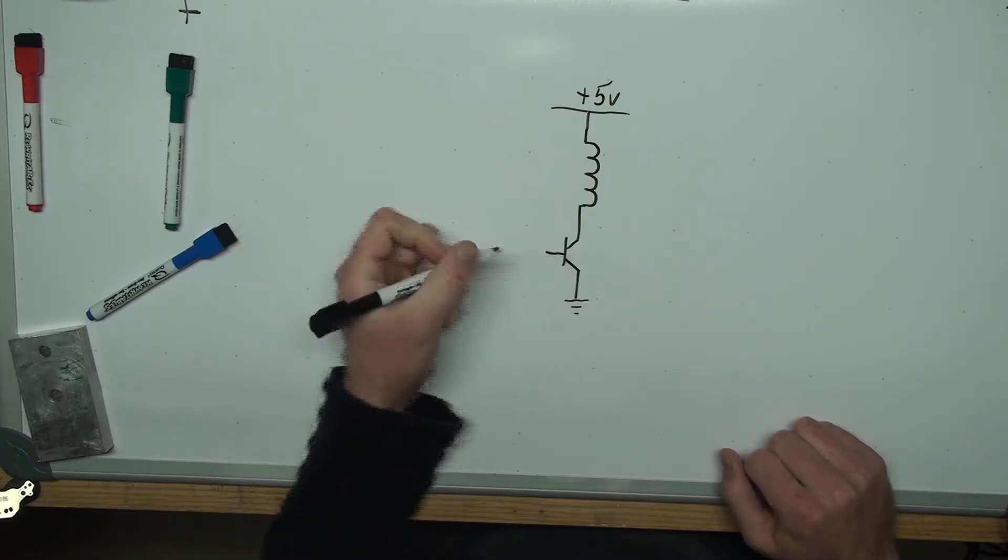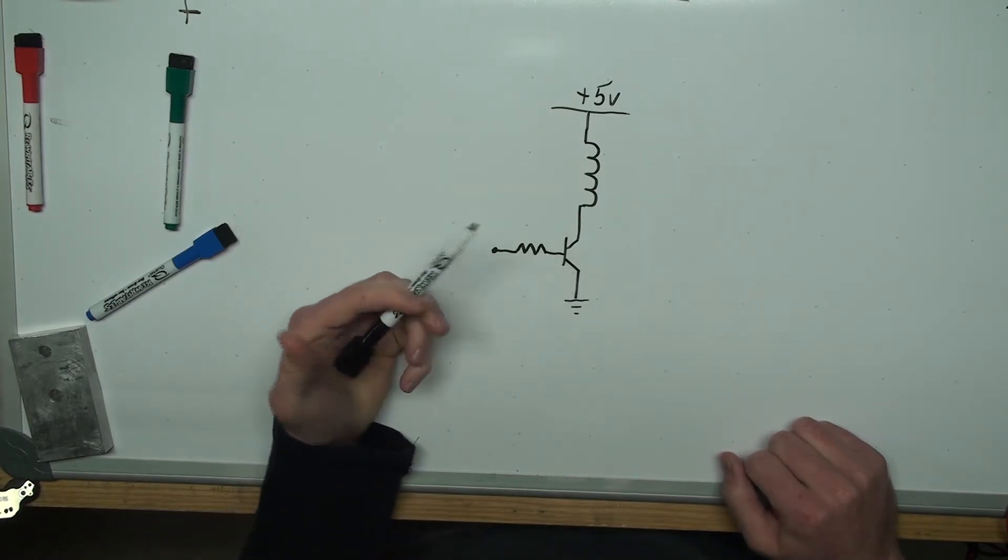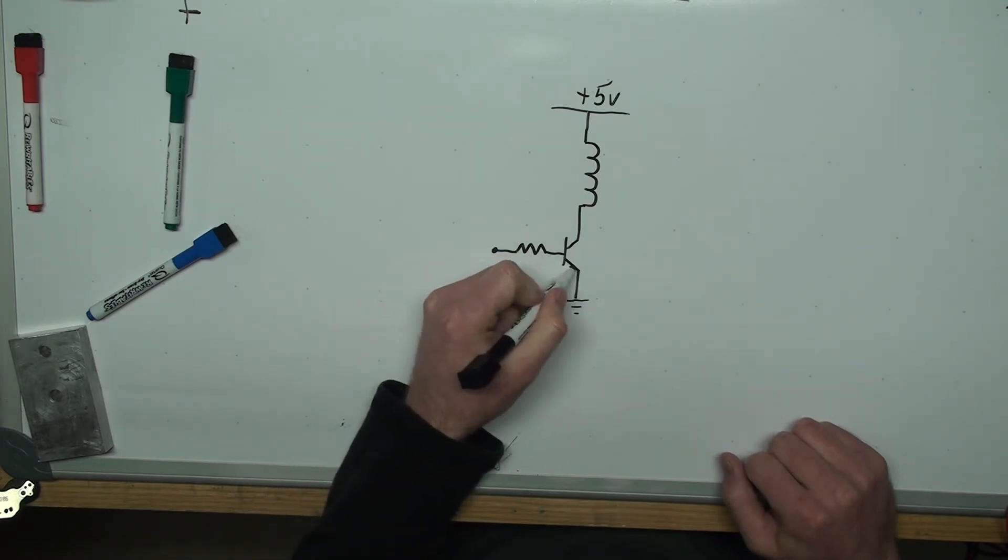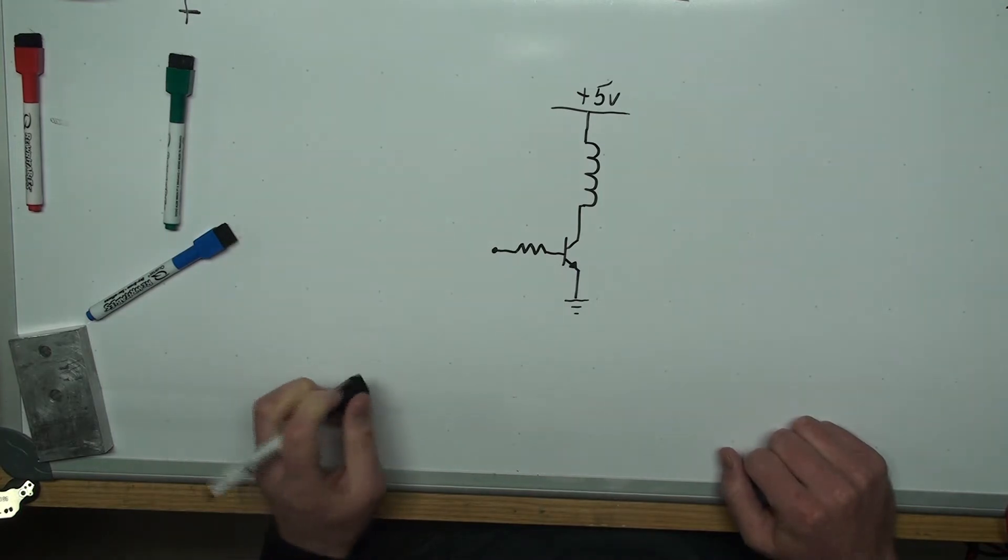In that case, I'll have a current limiting resistor, which you'll probably have, and this generally applies to MOSFETs, BJTs, whether they're NPN or PNP. This will be an NPN with the arrow there.